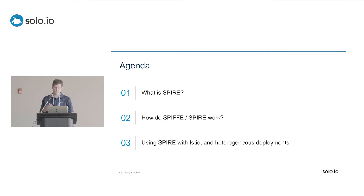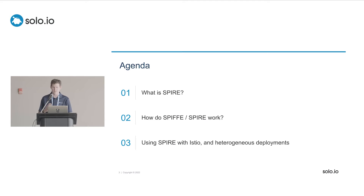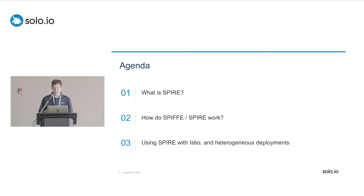The agenda: we're roughly going to walk through what SPIRE is, which necessarily talks about what SPIFFE is and how it relates to SPIRE. We're going to dig into how they work — how the various components are bootstrapped, how we establish identity for a specific workload — and then talk more specifically about how all that works with Istio, the benefits of using the default implementation versus SPIRE, and how this works with nonstandard, heterogeneous deployment patterns.